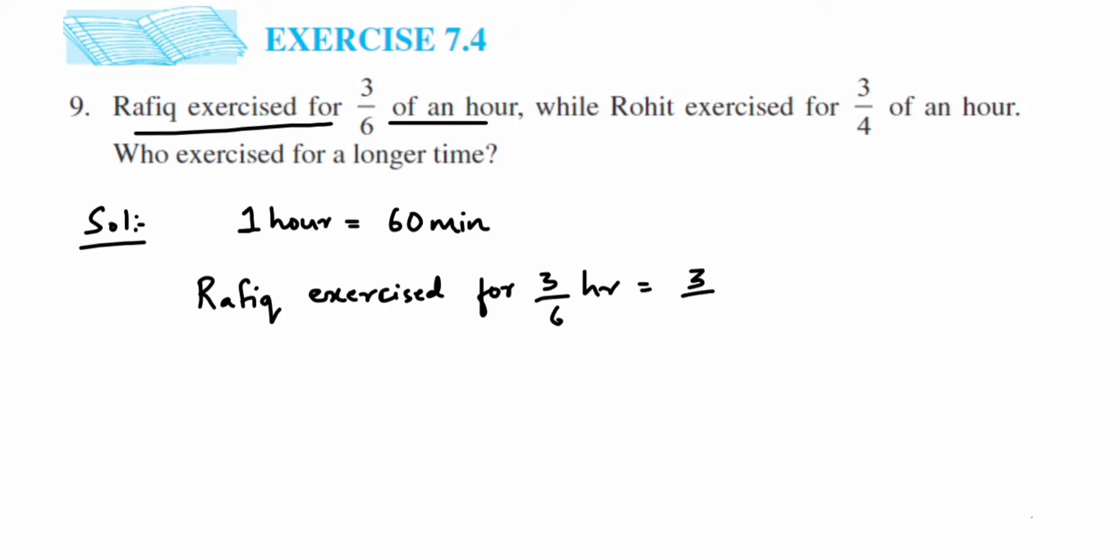We're going to write down: Rafiq exercised is equal to 3 upon 6 of an hour. So this is equal to 3 upon 6 of an hour.